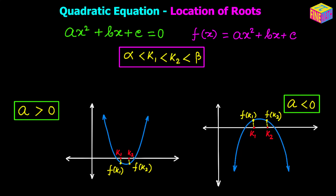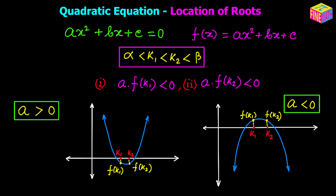To guarantee k1 and k2 are inside the parabola we use the condition that the product of the leading coefficient and the function value at that point is negative. In the first case the leading coefficient is positive but the function value is negative; in the second case the leading coefficient is negative but the function value is positive. So if a·f(k1) < 0 and a·f(k2) < 0, those are the necessary conditions to ensure k1 and k2 are between alpha and beta.